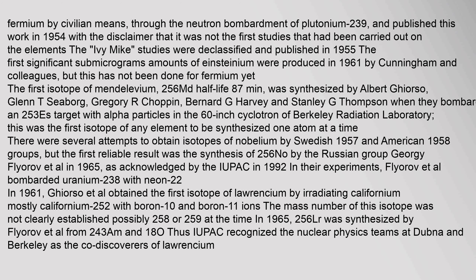The first reliable result was the synthesis of 256No by the Russian group of Georgy Flyorov et al. in 1965, as acknowledged by IUPAC in 1992. In their experiments, Flyorov et al. bombarded uranium-238 with neon-22. In 1961, Ghiorso et al. obtained the first isotope of lawrencium by irradiating californium (mostly californium-252) with boron-10 and boron-11 ions. The mass number was not clearly established — possibly 258 or 259. In 1965, 256Lr was synthesized by Flyorov et al. from 243Am and 18O. IUPAC recognized the nuclear physics teams at Dubna and Berkeley as the co-discoverers of lawrencium.